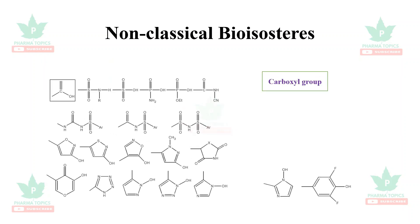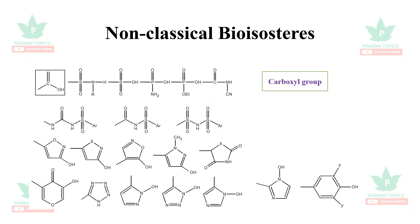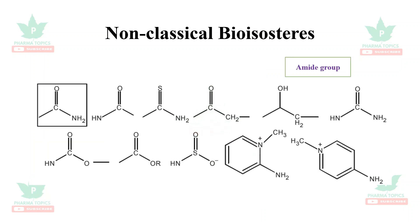The carboxyl group can be substituted with various functional groups to retain its activity — these are non-classical bioisosteric replacements for carboxyl. Similarly, the amide group (–CONH₂) can be replaced with –CONH–, –C(=S)NH₂–, or –C(=O)CH₂– and other substitutions to retain the activity of the amide group.